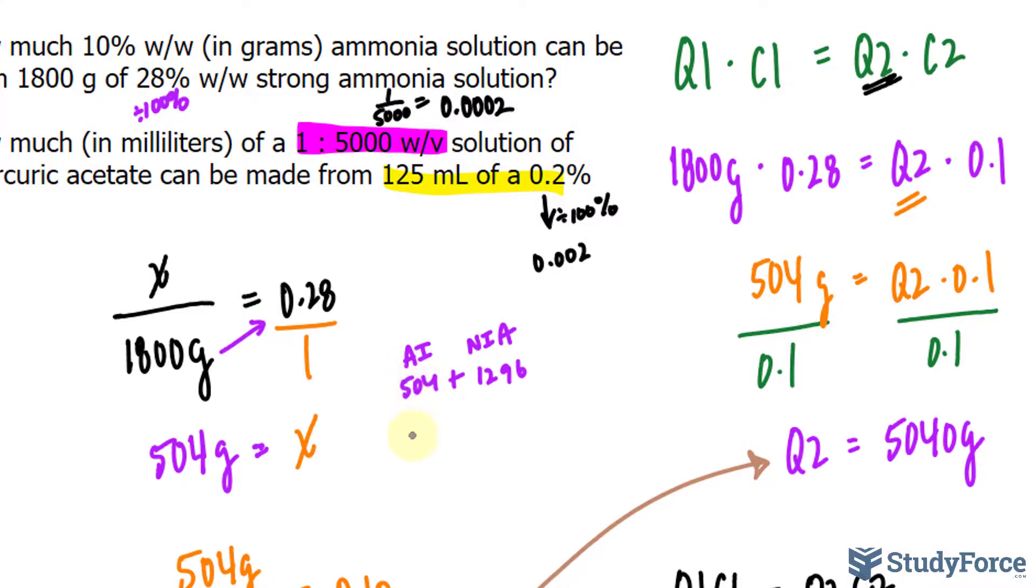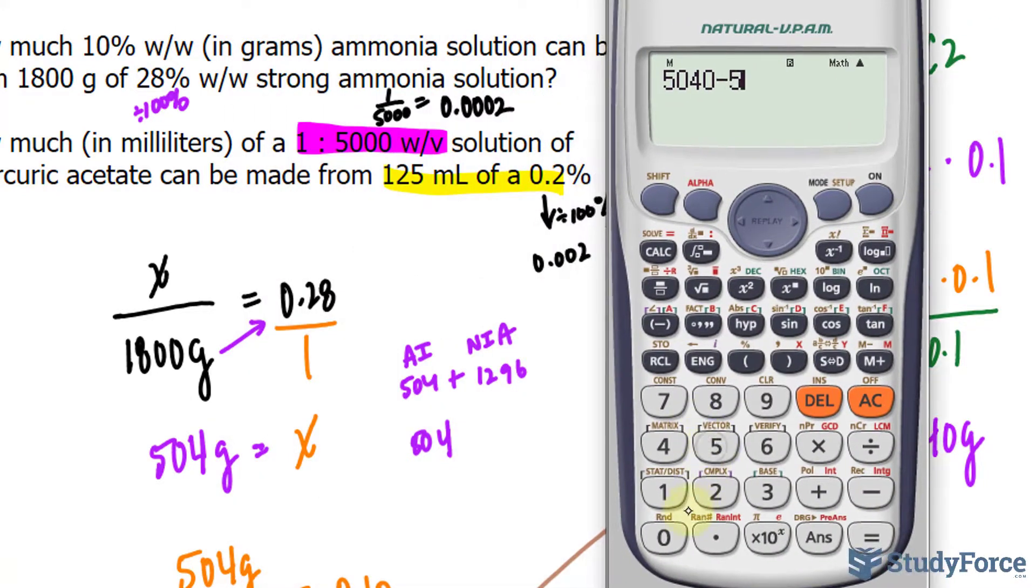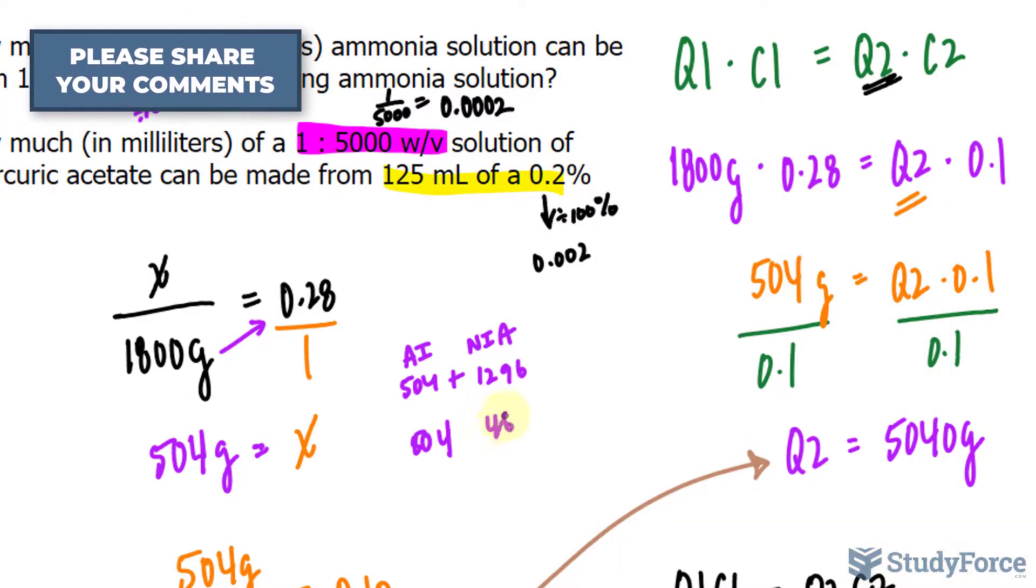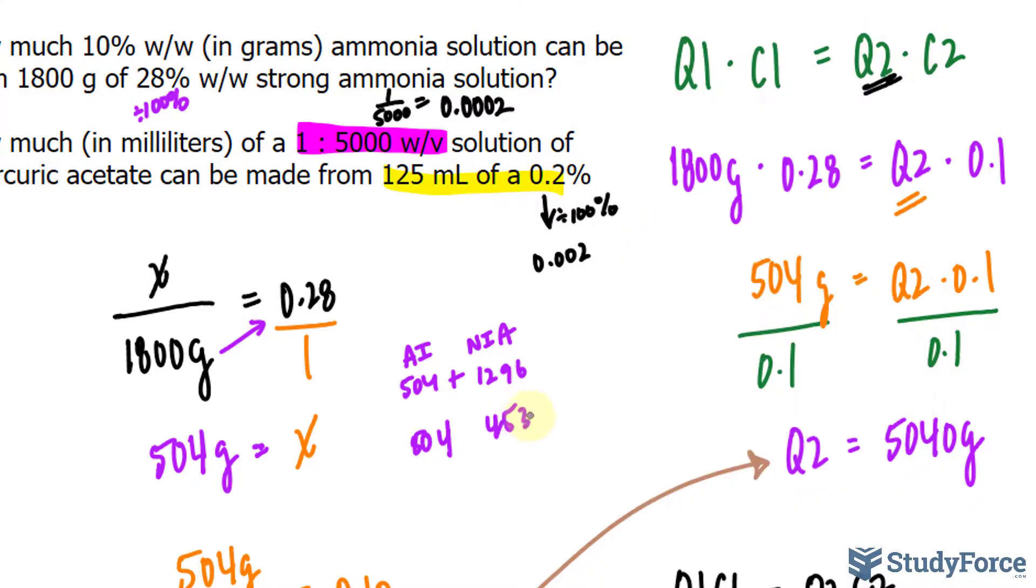Then we learned that we needed 5,040 grams of a complete solution to get a strength of 10%. Since the active ingredient doesn't change in the dilution, subtracting that amount, 504 from 5,040, means that we needed 4,536 grams of non-active ingredient.